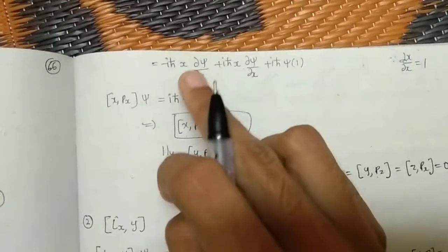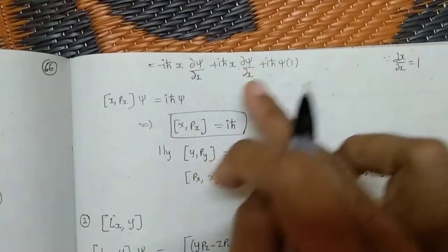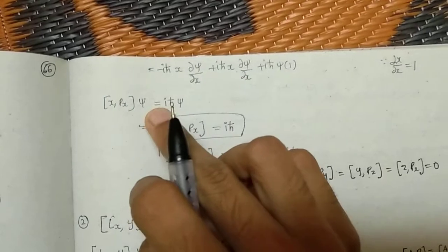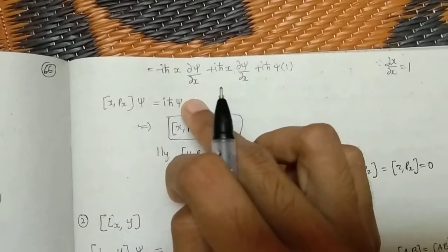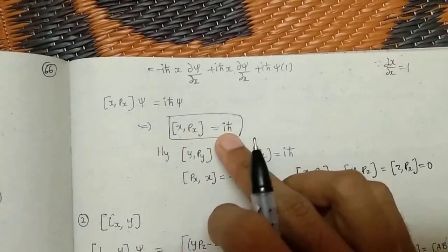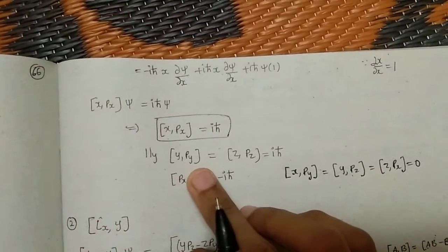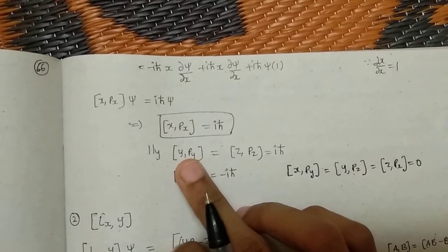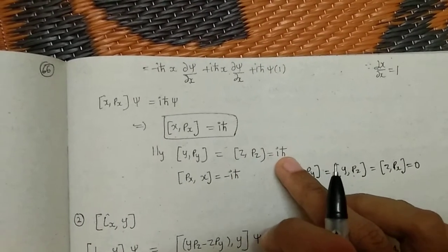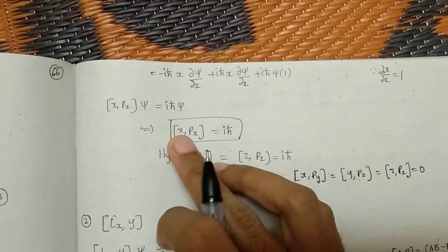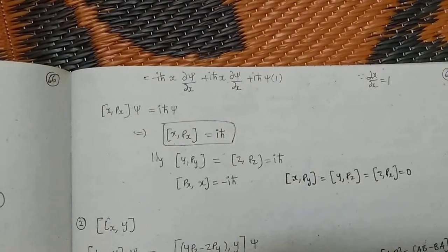Since dou x by dou x equals 1, we get xi times 1. The two dou xi by dou x terms are the same but with opposite signs, so they cancel. Finally, xi is common on both sides and cancels, giving us [x, px] = iħ. Similarly, [y, py] = iħ and [z, pz] = iħ. If we interchange — placing px before x — we get minus iħ.